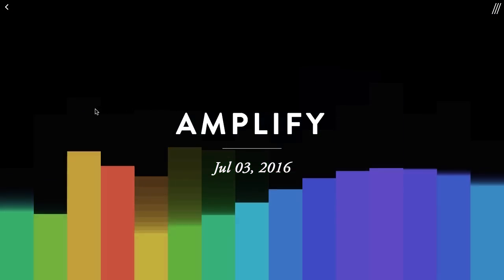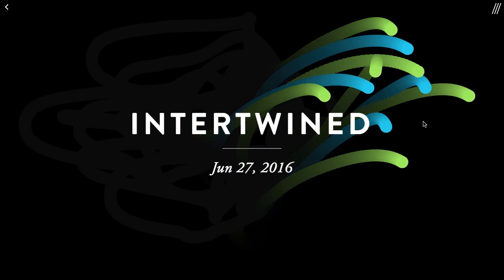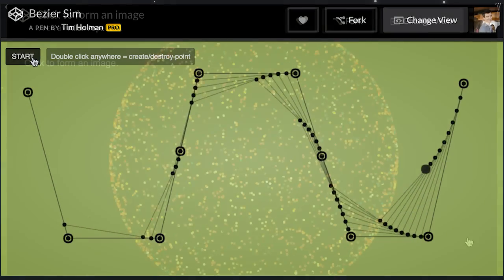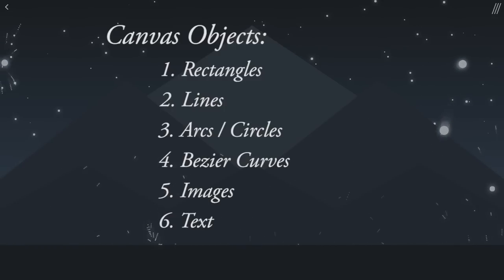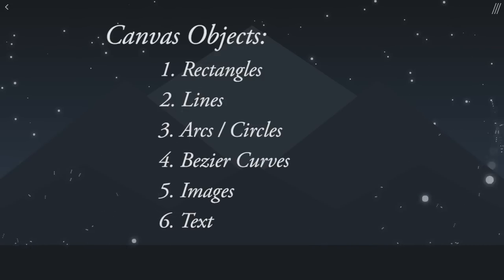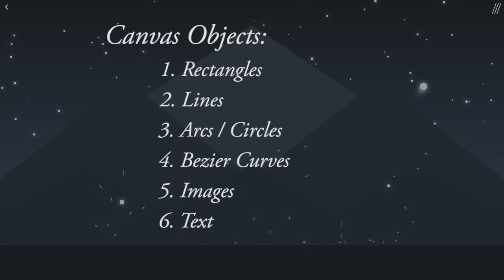With the canvas we can draw rectangles, lines, arcs which we can use to also create circles, bezier curves, images, and text. For the sake of time, we're not going to be covering how to draw all of these within this course, but we will be covering those which are most widely used, which are the first three: rectangles, lines, and arcs. Once we have a solid foundation in how to draw these three shapes, we'll be moving into some programming 101, where I'll show you how to officially create hundreds of these shapes at once using only a couple lines of code. So without further ado, let's get to work and cover skill number two — drawing on the canvas.